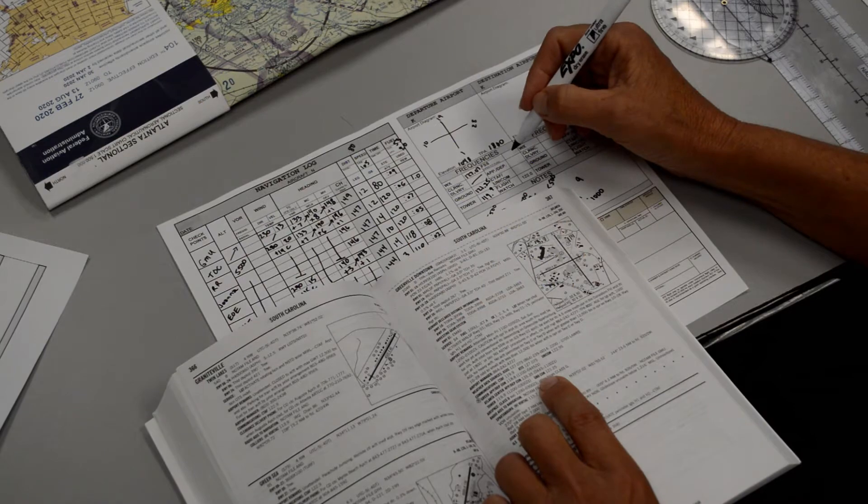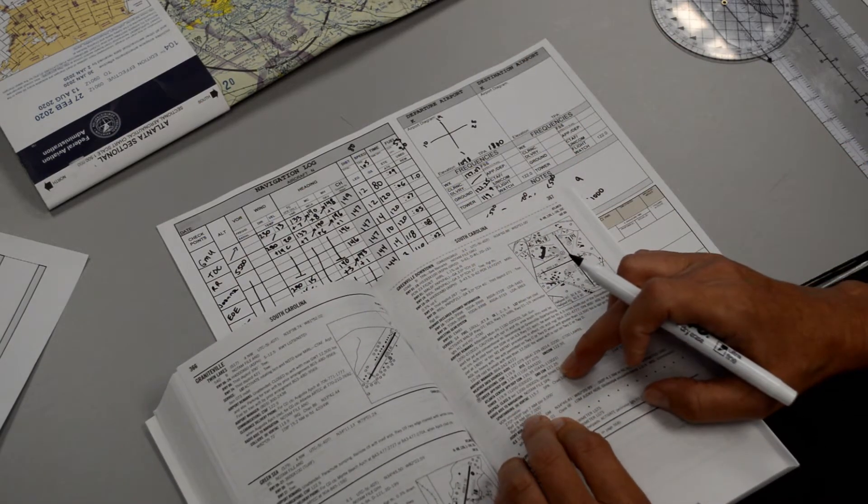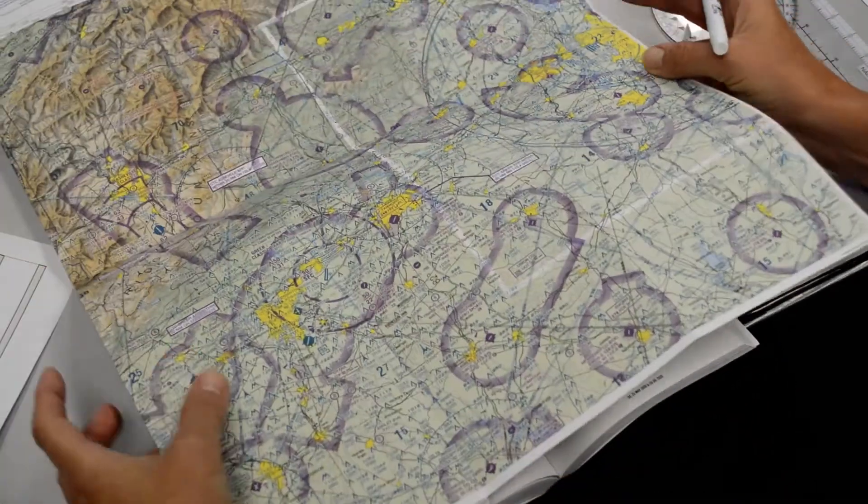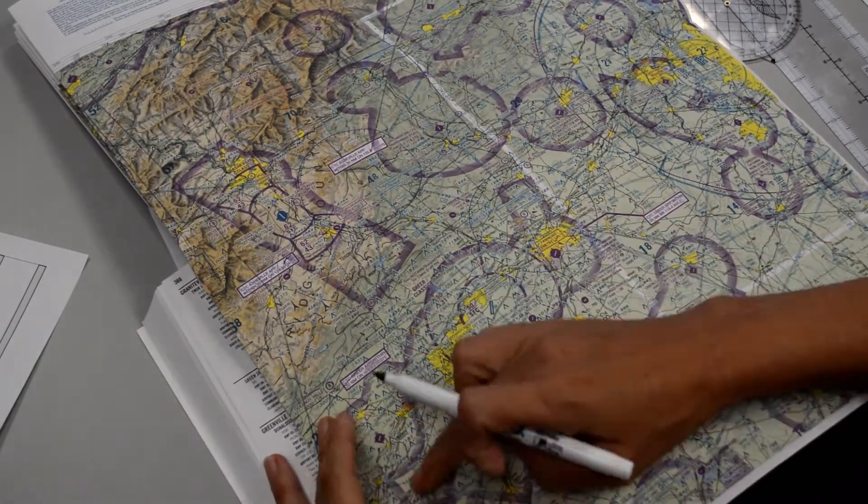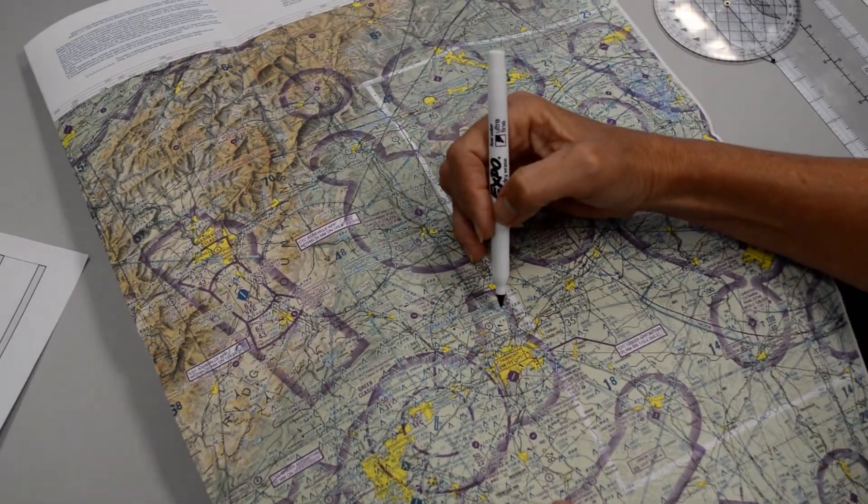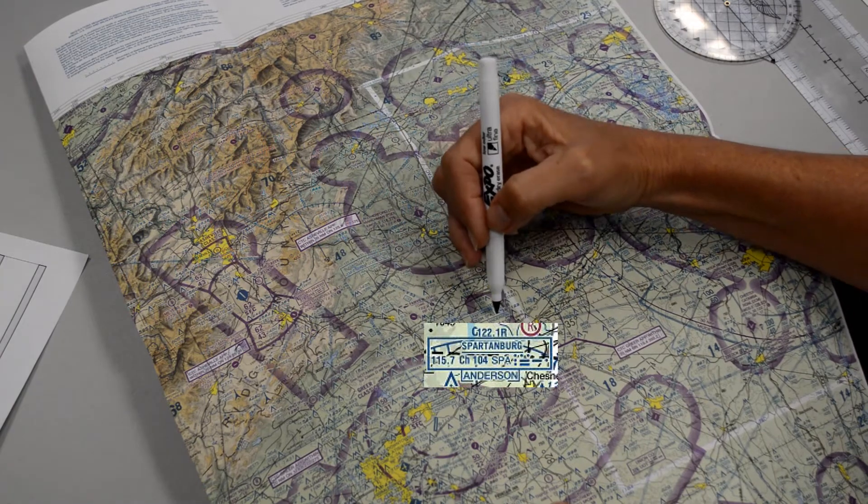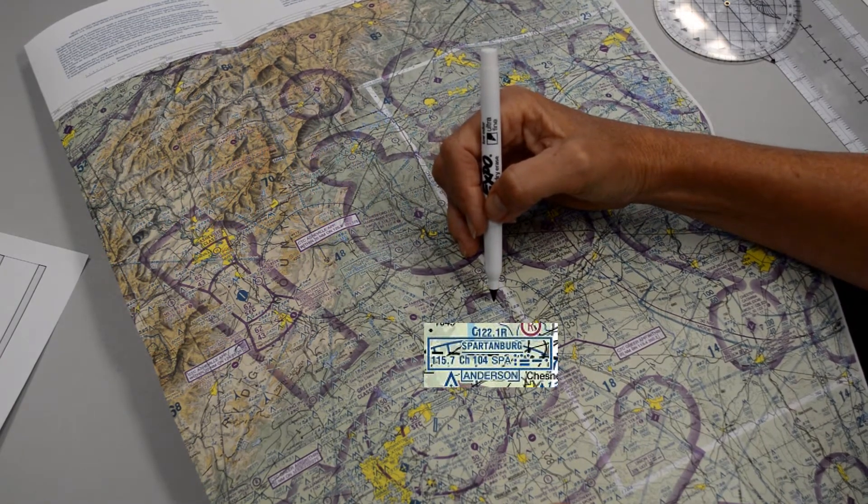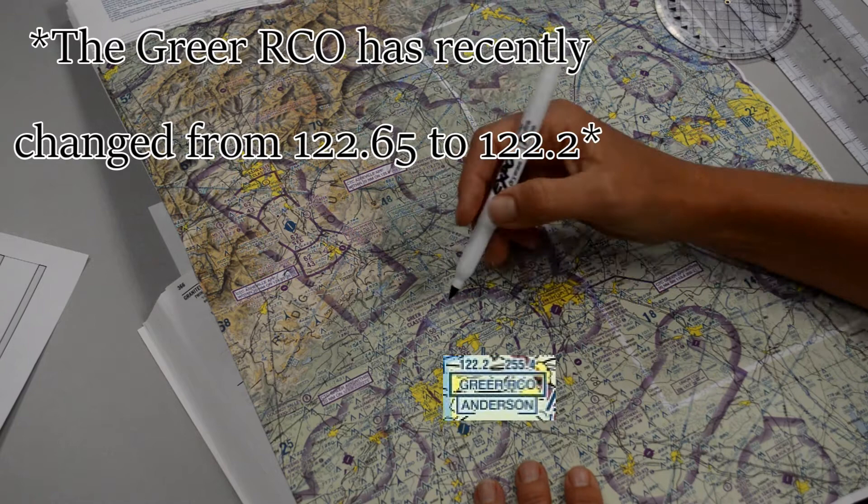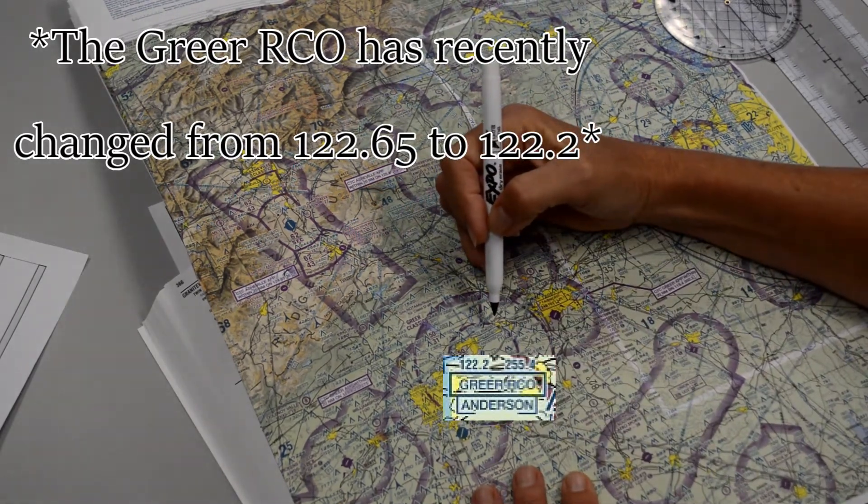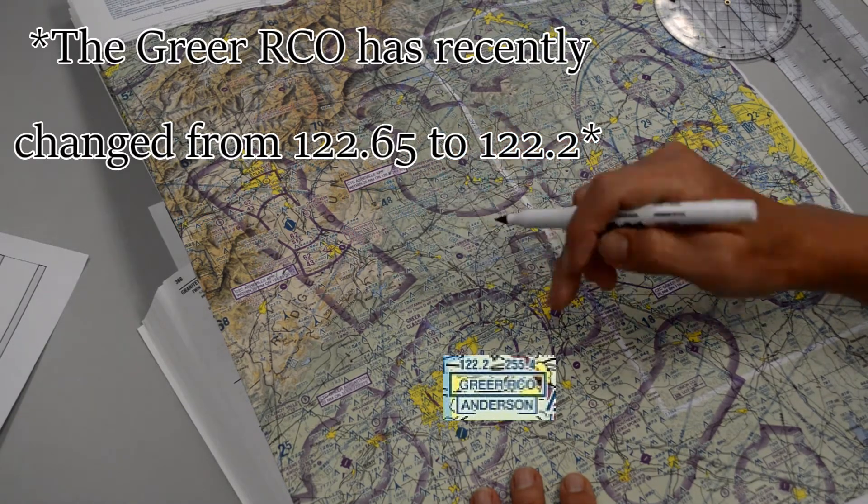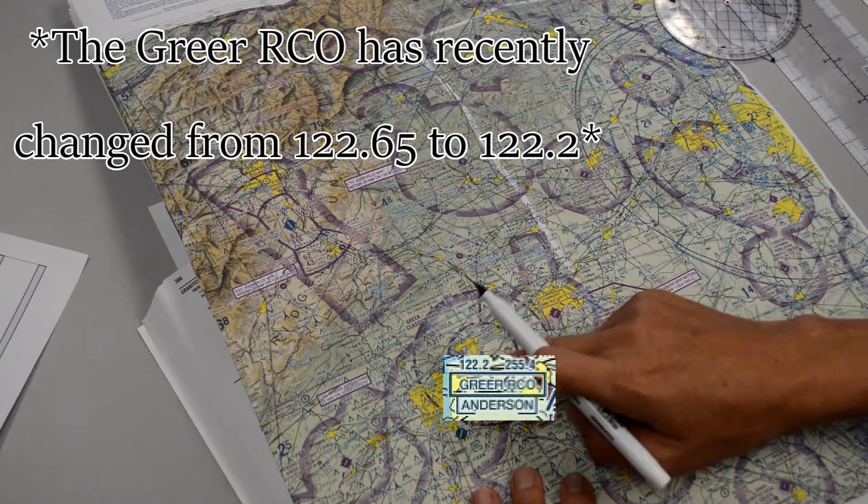And the flight service station frequency, so they're listed in the book, and they may also be listed on the sectional chart. So I want to point this out. In our area, you look for the nearest VOR and see if there is a frequency for the flight service station. So I see Anderson Flight Service Station on 122.1 with an R beside it. But I also see an additional box right here that I could use because it's closer.